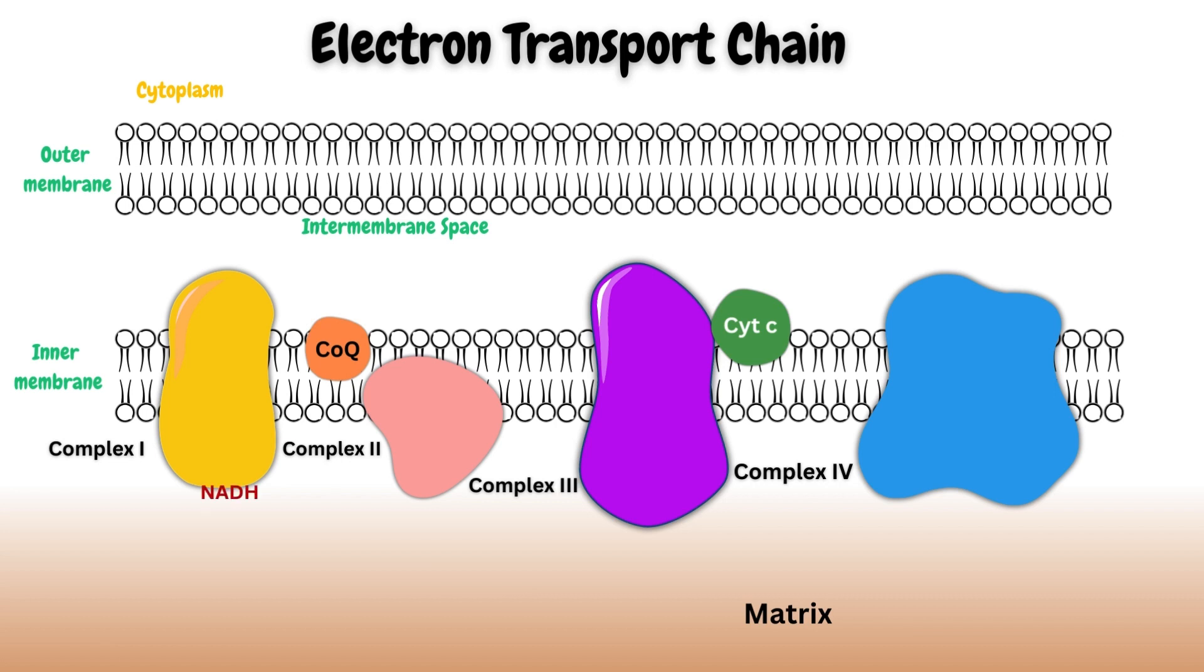The process begins when NADH from the mitochondrial matrix binds to the matrix side of complex 1, also known as NADH dehydrogenase. NADH dehydrogenase removes two electrons from NADH, which then gets oxidized to NAD+. The electrons are then received by a prosthetic group, flavin mononucleotide or FMN. Upon receiving these electrons, FMN is reduced to FMNH2. These electrons are then transferred through a series of iron-sulfur clusters within complex 1, finally reaching ubiquinone or coenzyme Q, which is a lipid-soluble electron carrier that moves freely within the inner mitochondrial membrane. Energy is released as electrons move through complex 1. This energy is used to pump protons from mitochondrial matrix into intermembrane space.